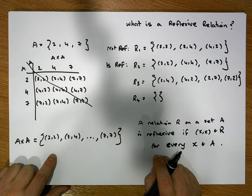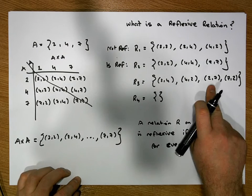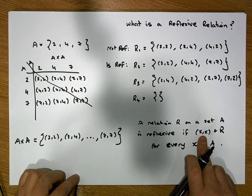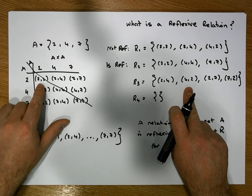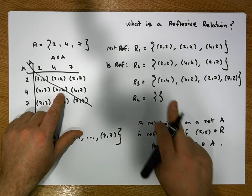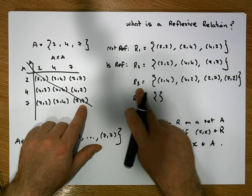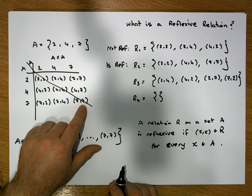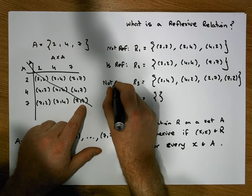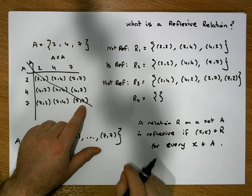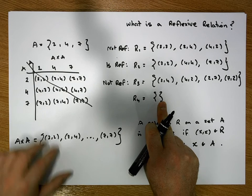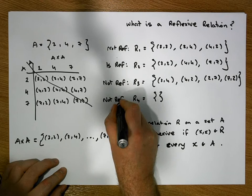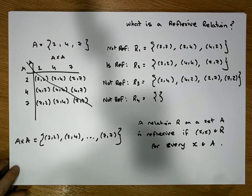For r3 to be reflexive it needs to contain (x,x) for every x in the set — it needs (2,2), which it doesn't have; (4,4), which it doesn't have; and (7,7), which it doesn't have. So there are three reasons why r3 is not reflexive. Clearly the empty set doesn't contain any of these values, so that's also not reflexive.